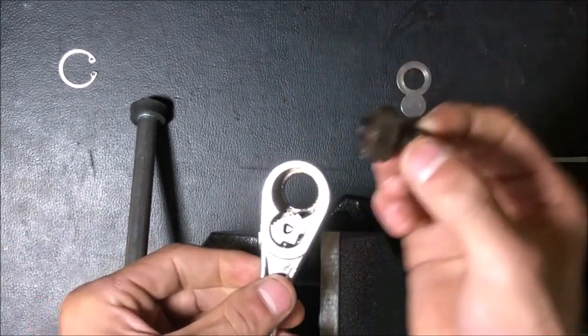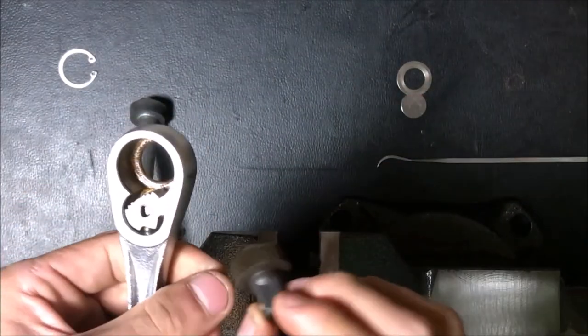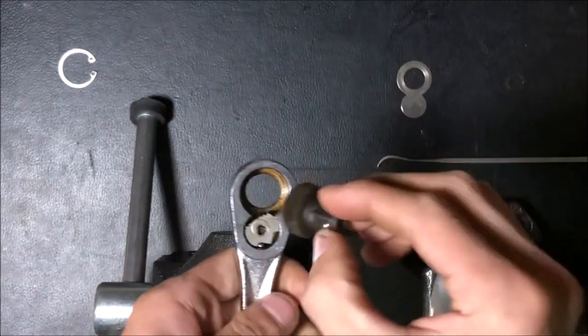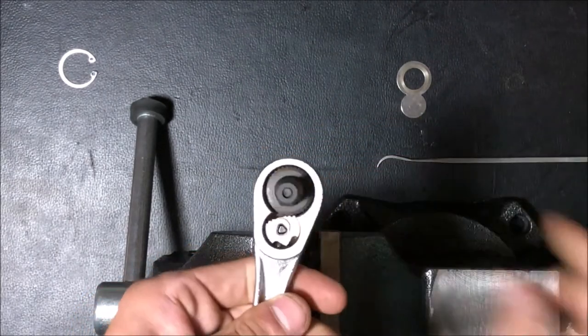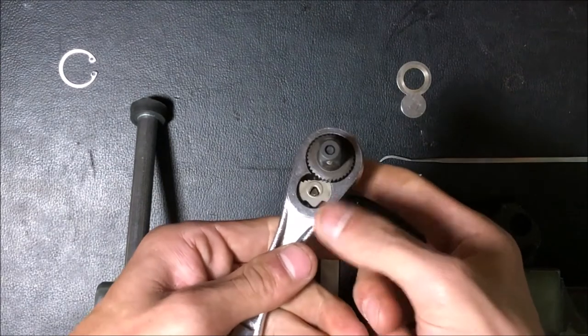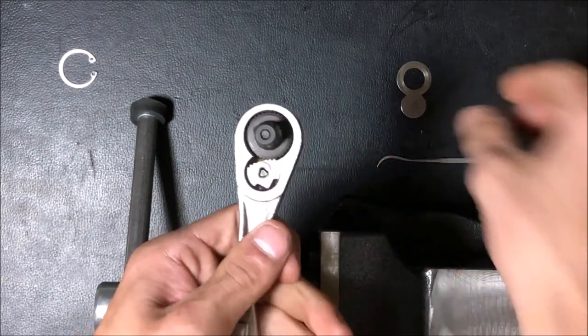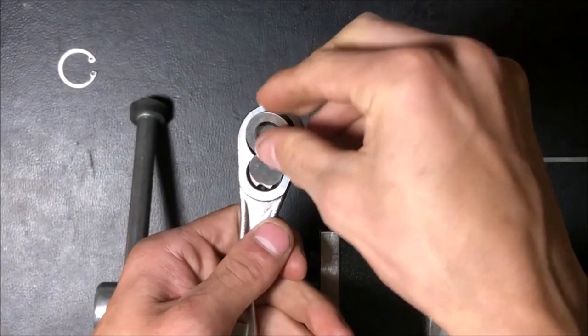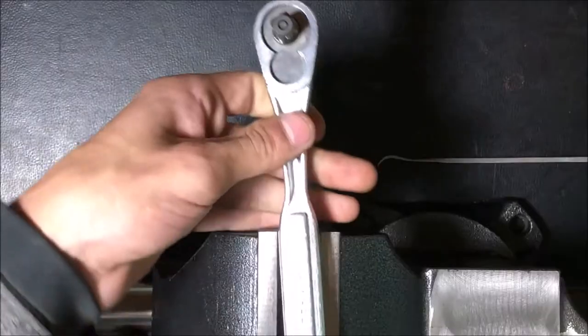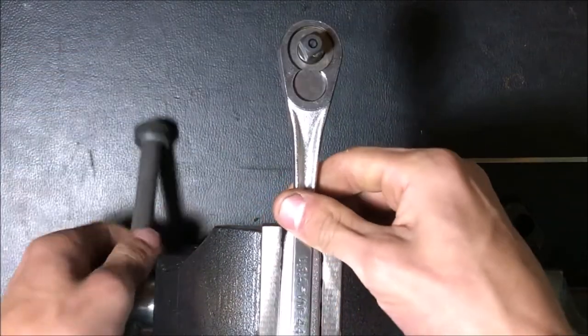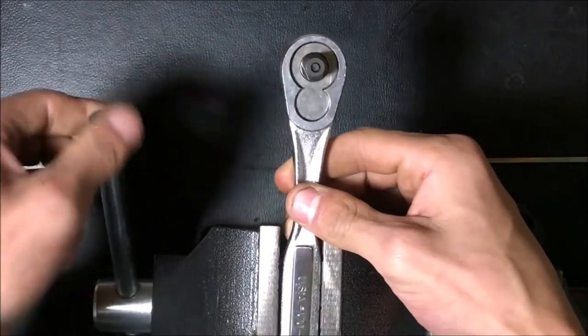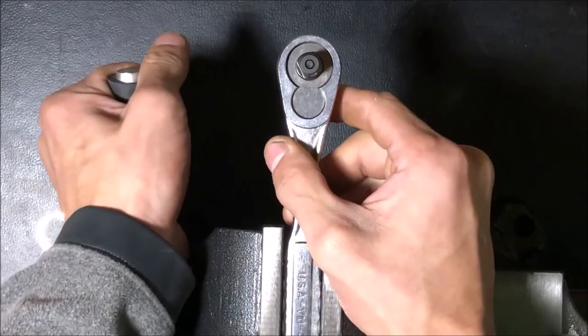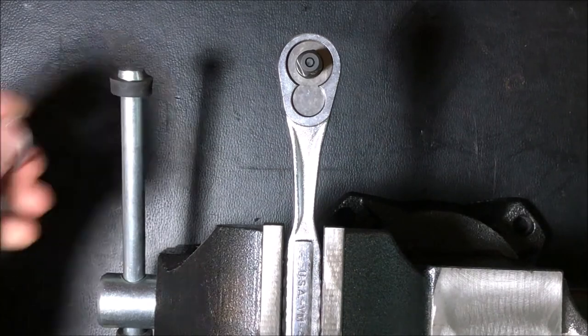Now, all there's left to do is to take the new ratcheting mechanism, stick it in like that. Stick some white lithium grease in there, or grease, or something. Stick this back on, the new cover. Because this is going to be painfully challenging, I'm going to stick it back in the vise.